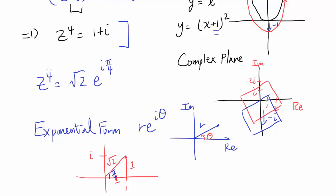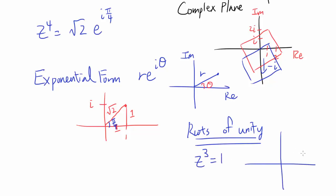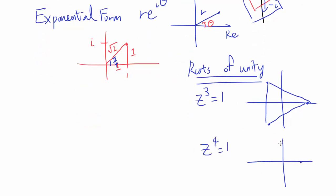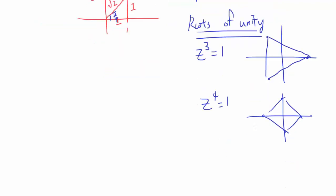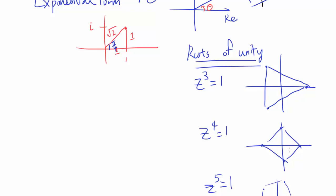What happens when you take the fourth root? Remember roots of unity: z cubed equals 1 gives 3 points forming an equilateral triangle; z to the fourth equals 1 gives a square; z to the fifth equals 1 gives a regular pentagon. In our case, z to the fourth equals √2 · e to the i·π/4. The e to the i·π/4 specifies the angle, while √2 specifies the distance from the origin.